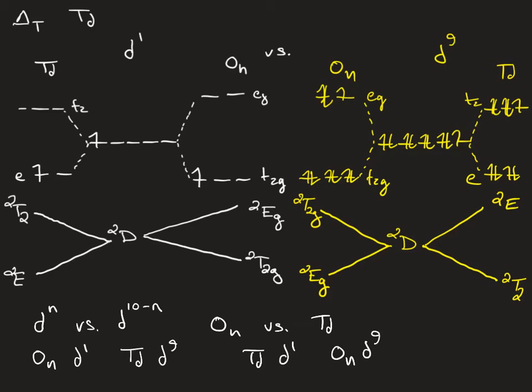So the consequence of this is that we can use the Tanabe-Sugano diagram for TD symmetry if we look at the D10 minus N Tanabe-Sugano diagram. So, for example, with the D2 species, we would use the D8 Tanabe-Sugano diagram if we wanted to analyze it in TD symmetry.